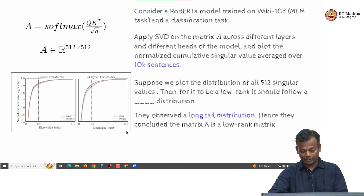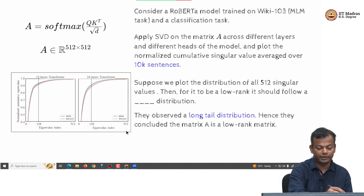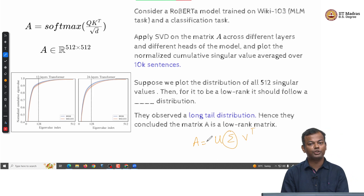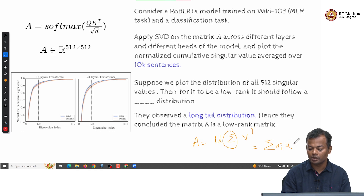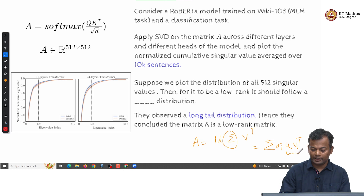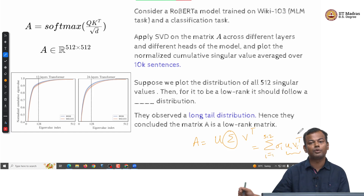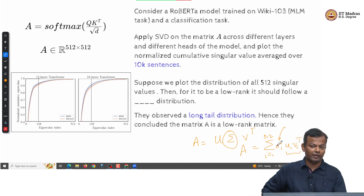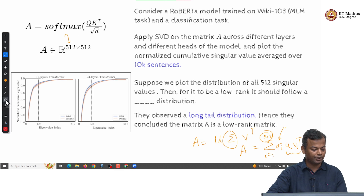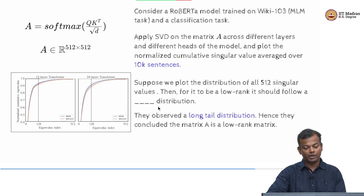So if the attention matrix is low rank, what do we do with it? In the singular value decomposition, you can write A as a summation: Σᵢ σᵢ uᵢ vᵢᵀ, where uᵢ vᵢᵀ is a matrix from the outer product of two vectors, with i running from 1 to 512. If the sigmas are small, those terms are not really contributing, so you do not need all 512 terms — 512 here being the sequence length.